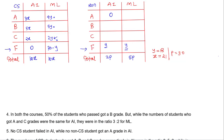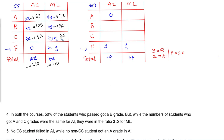Now let's substitute the values. With x = 21: CS AI grades are 63 (A), 105 (B), 42 (C), total 210. With y = 18: CS ML grades are 72 (A), 90 (B), 36 (C), and CS ML failures = 30 - 18 = 12, total 210. With p = 30: non-CS AI is 60 students, non-CS ML is 150 students, and non-CS failures are 18 in AI and 18 in ML.